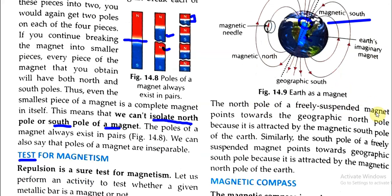The north pole of a freely suspended magnet points towards the geographical north pole because it is attracted by the magnetic south pole of the Earth. The north pole of a freely suspended magnet points towards the geographical south pole because it is attracted by the magnetic north pole of the Earth.